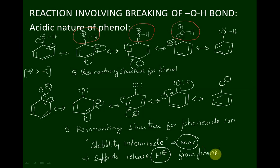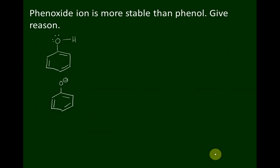Whenever phenol gets converted into phenoxide ion, the phenoxide ion becomes more stable due to resonance, which easily supports the release of H⁺ ion from phenol. This is a very simple concept. One question that arises in Class 12 is: phenoxide ion is more stable than phenol — give reason. We can explain this based upon the resonating structures.